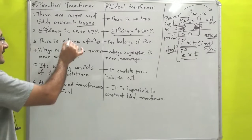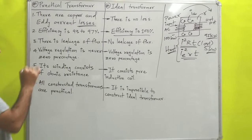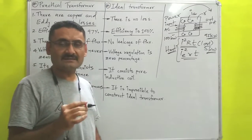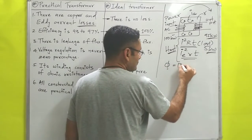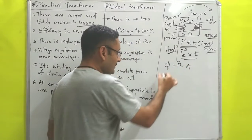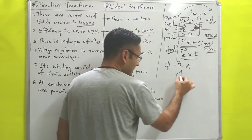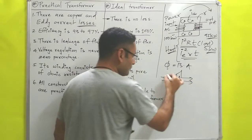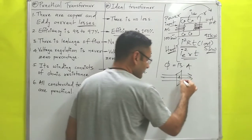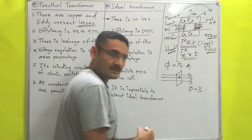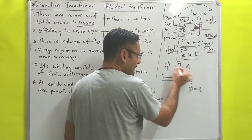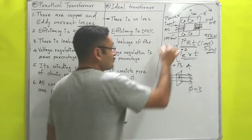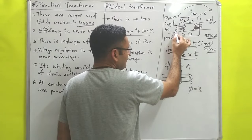Next, there is a leakage of flux in practical transformers. Flux means φ = B·A — the number of field lines passing through a given area. Suppose this area A has three field lines passing through it, so flux through this area is three — that is the meaning of flux.